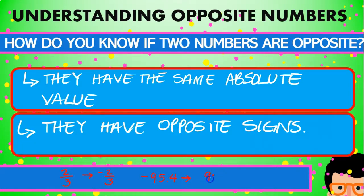its opposite is going to be the same number, but the opposite sign. So in this case, positive 95.4, because you can see that they have both checks. So they have the same absolute value.